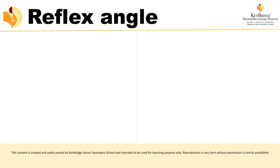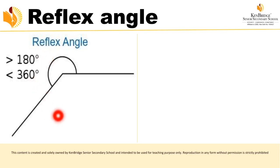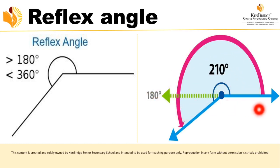A reflex angle is an angle greater than 180 degrees but less than 360 degrees. A straight angle is 180 degrees; a complete angle is 360 degrees. A reflex angle falls between these — more than 180 but less than 360 degrees.